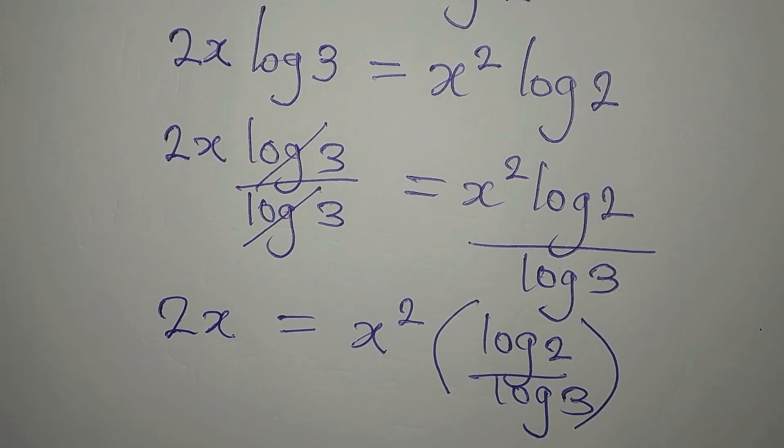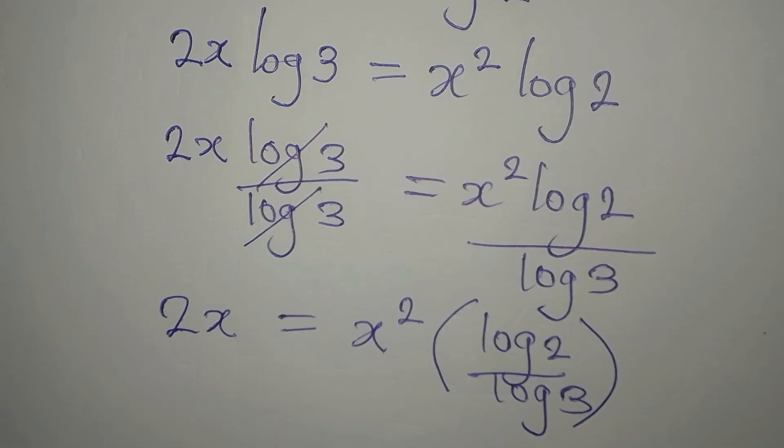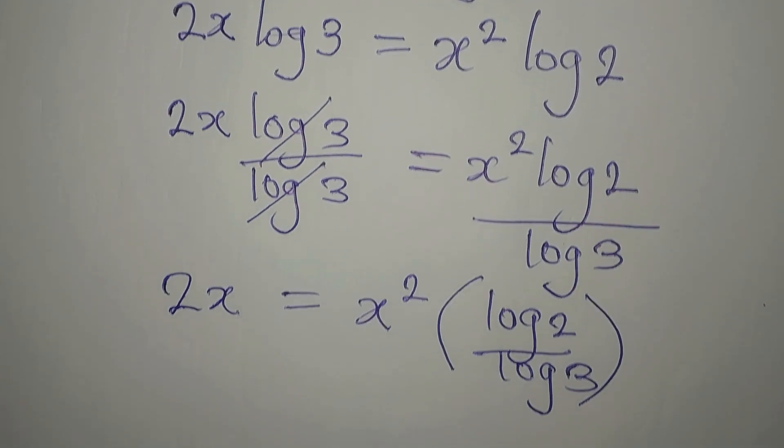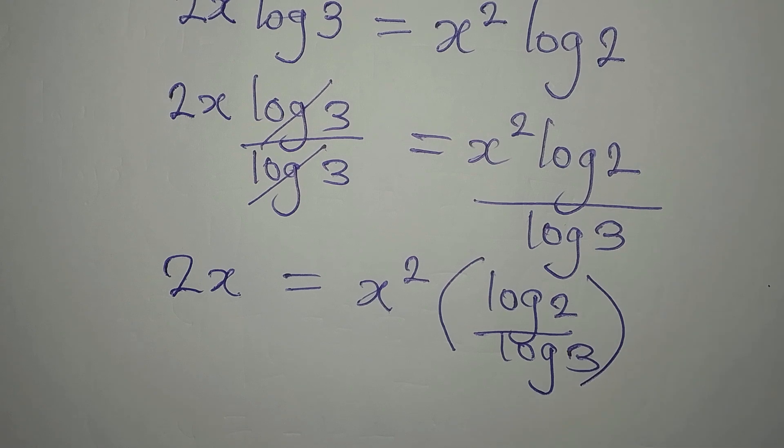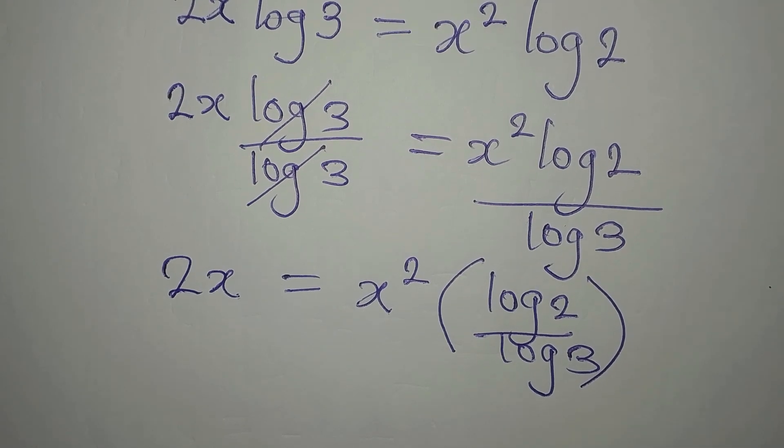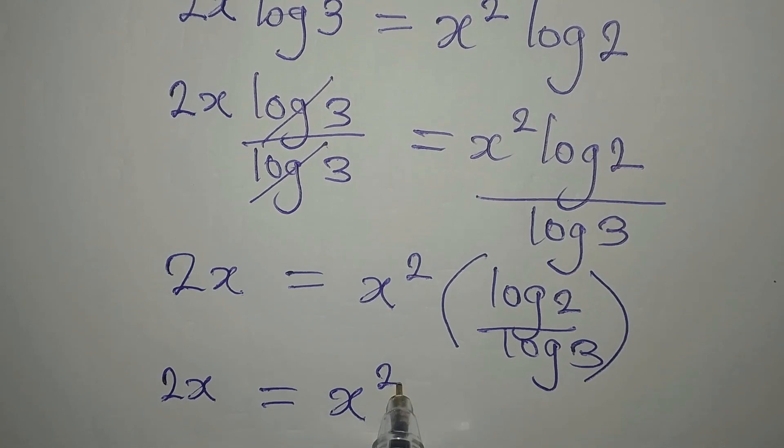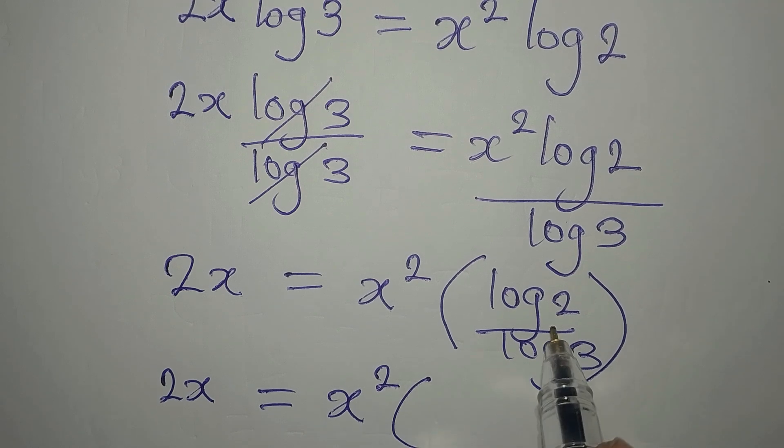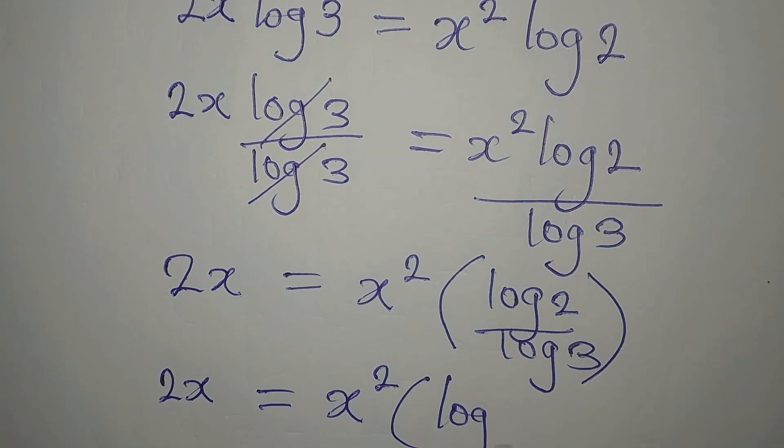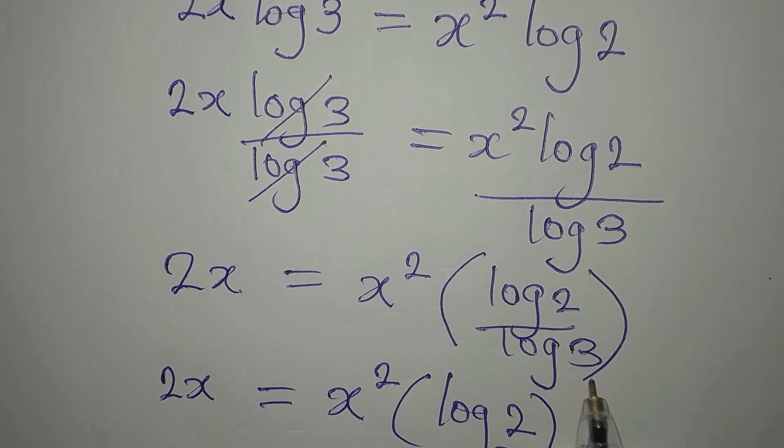We have not changed anything on the right. Now the next thing, I want to write this using change of base. We apply change of base, so we have 2x equal to x squared, then we have log 2 to base 3. This 3 here becomes the base to the numerator.